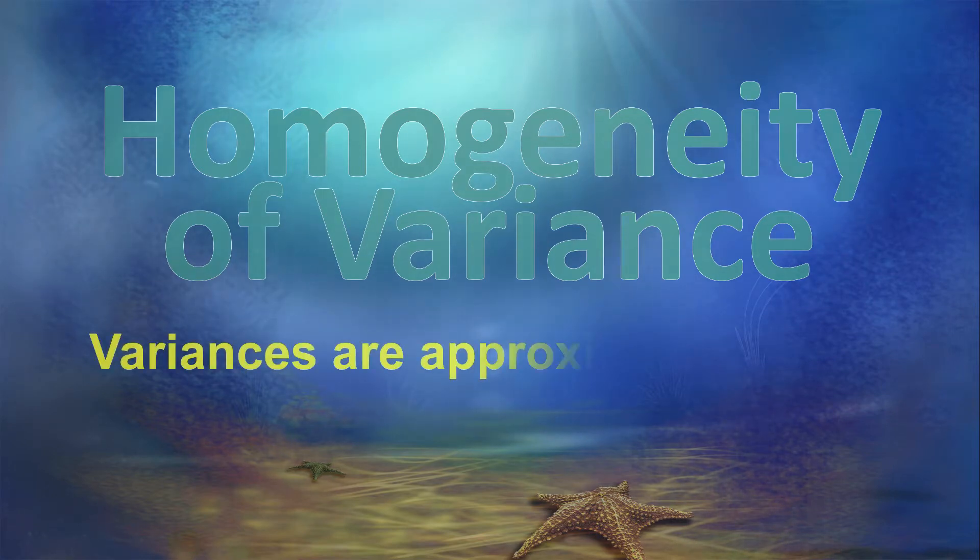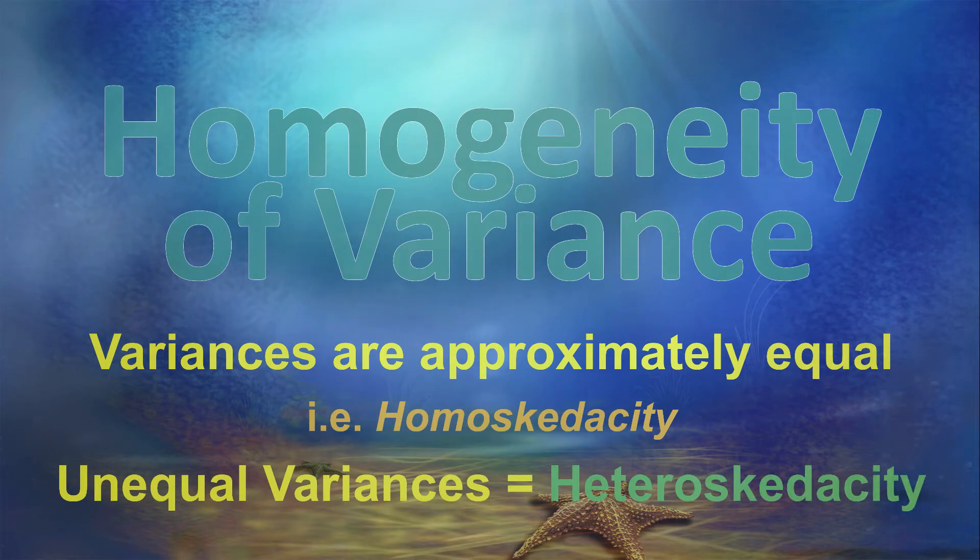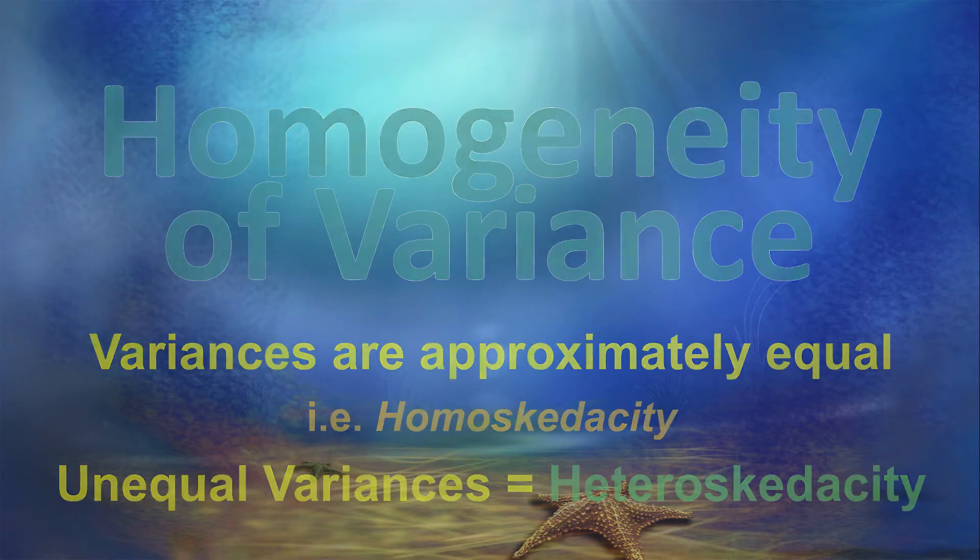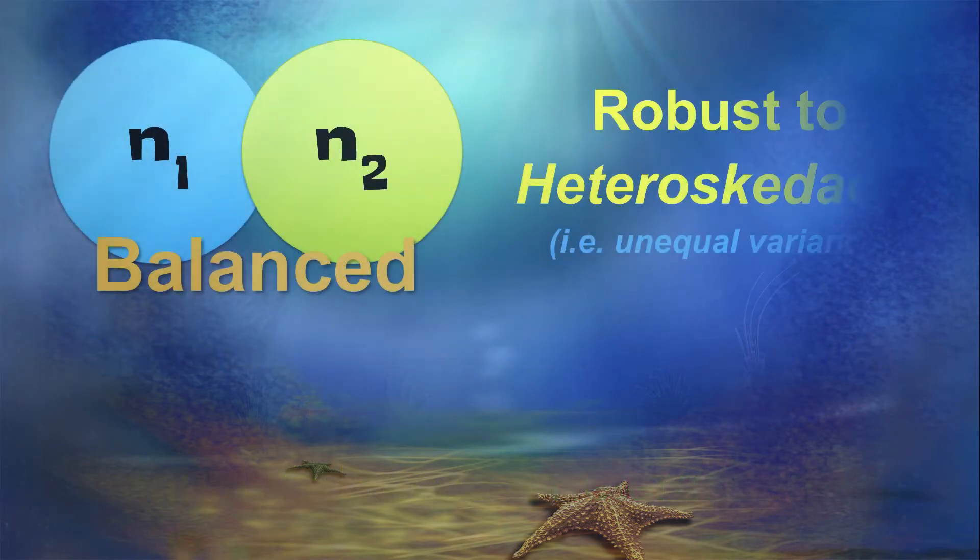But here's the thing. When sample sizes are equal, then unequal variances are not a problem. The t-test is insensitive to heteroscedasticity. We might say that student's t-test is robust to heteroscedasticity when sample sizes are equal.